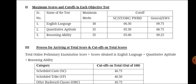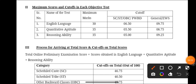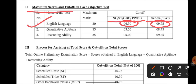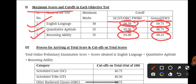This is the official screenshot taken from the official website of IBPS. For English, the sectional cutoff for SC, ST, OBC, and PWD candidates is 6.50, and for General and EWS it is 9.75. Quantitative Aptitude sectional cutoff is 5.50 for SC, ST, OBC, and PWD candidates, and for General and EWS it is 8.75. Reasoning Ability sectional cutoff is 5 marks for SC, ST, OBC, and PWD candidates; for General and EWS it is 9.25.